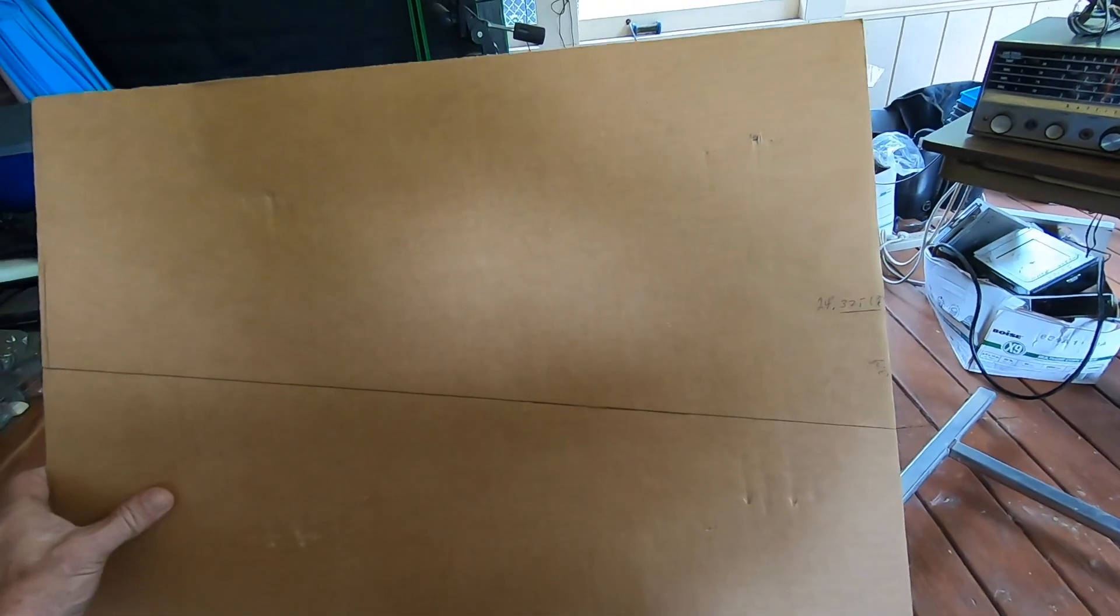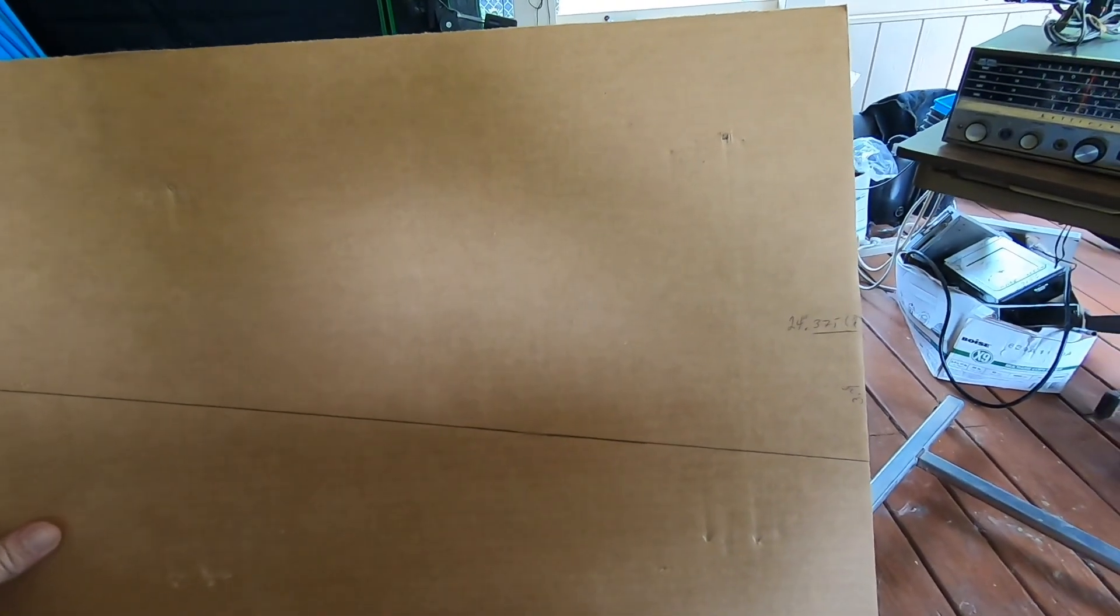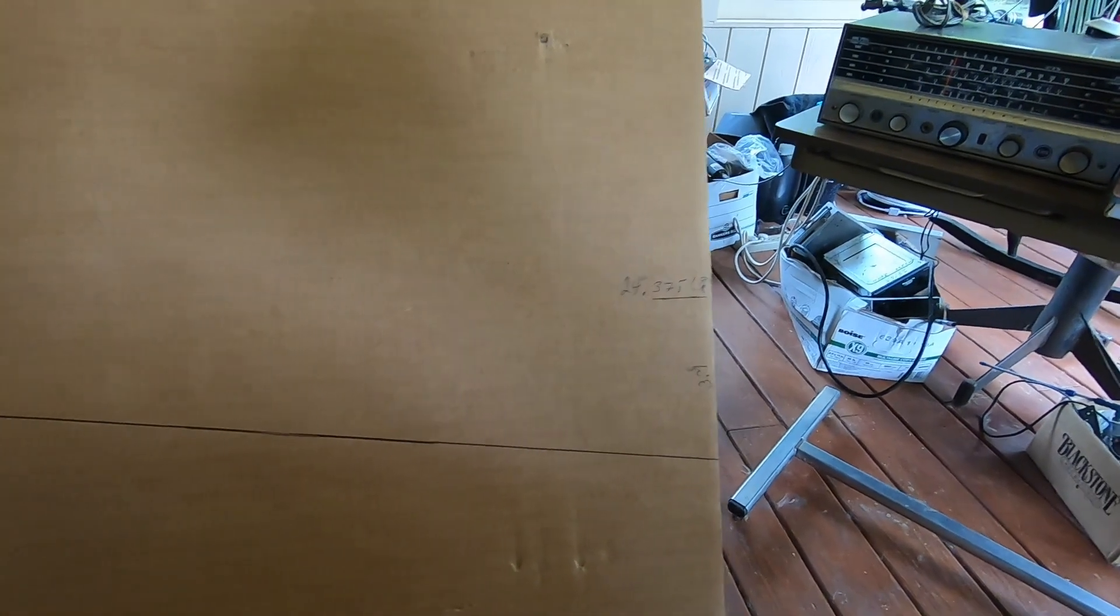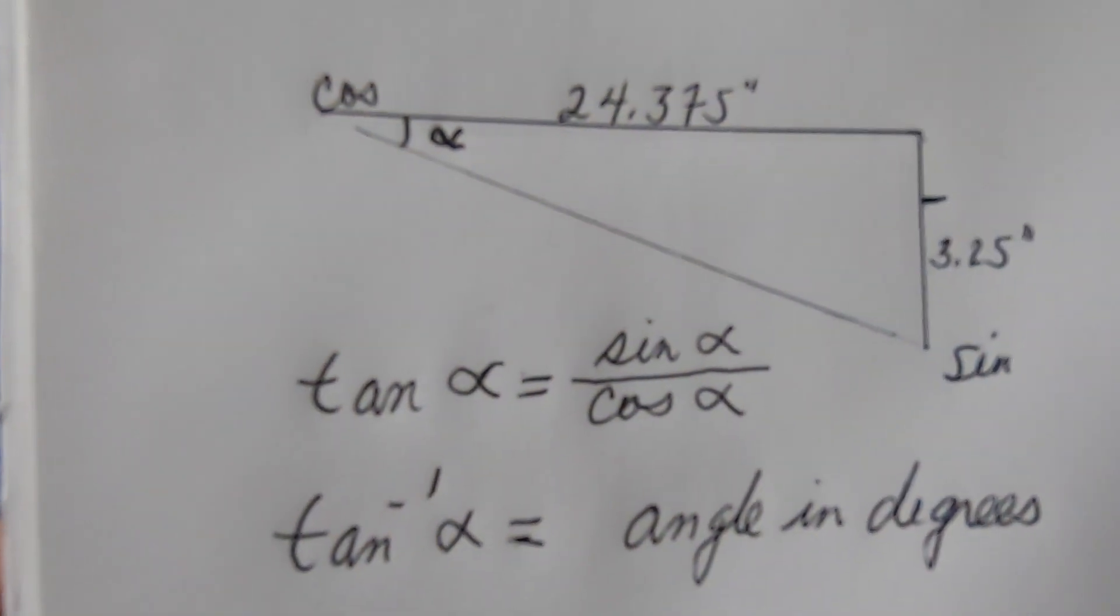We traced it out on a piece of cardboard and what we found was we had three and a quarter inches of rise and we had 24 and 3 eighths inches of run. Let's look at the calculation on that.